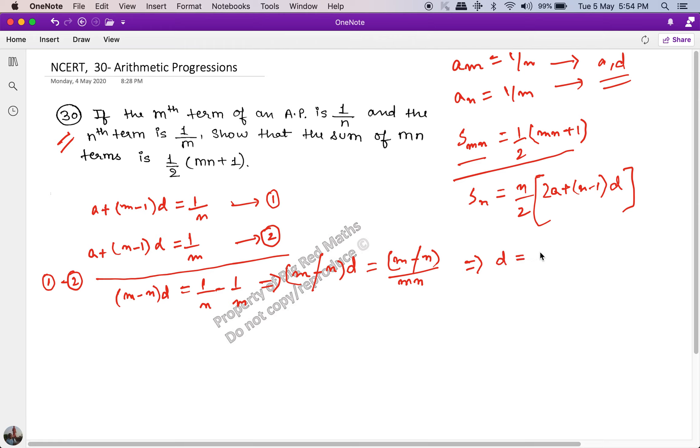This gets cancelled with this and I get the value of d as 1 upon m multiplied by n. If I put the value of d as 1 upon mn in equation 1, what do I get?